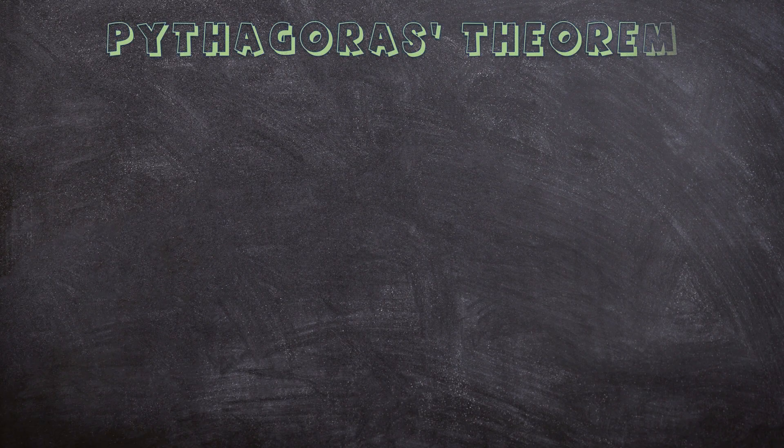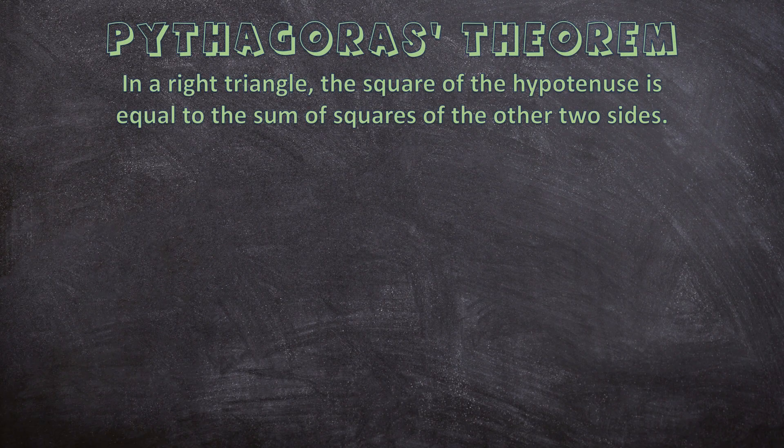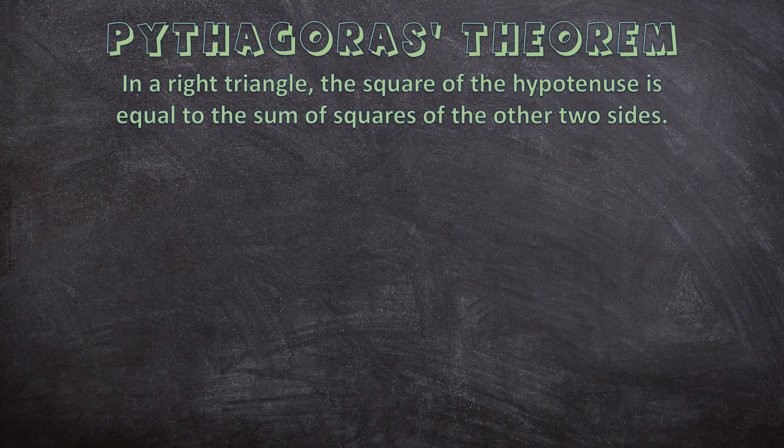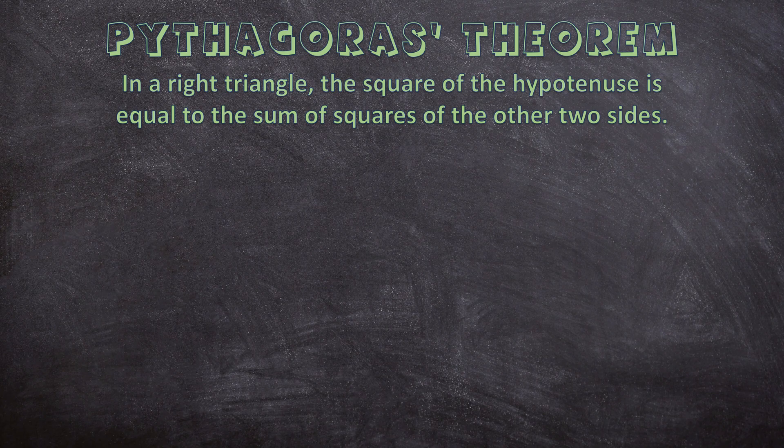First, let's look at what Pythagoras theorem states. So it says, in a right triangle, the square of the hypotenuse is equal to the sum of the squares of the other two sides. Now this is a mouthful and by just reading this sentence, you don't quite understand yet. But let's break this sentence down piece by piece and you'll get the whole picture.